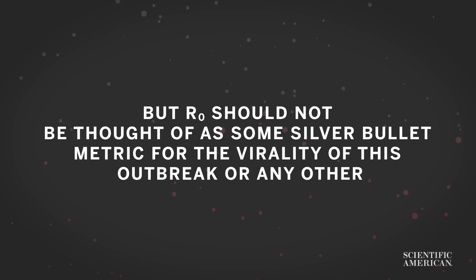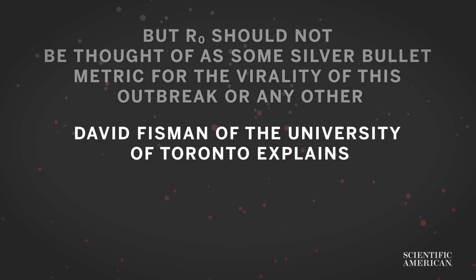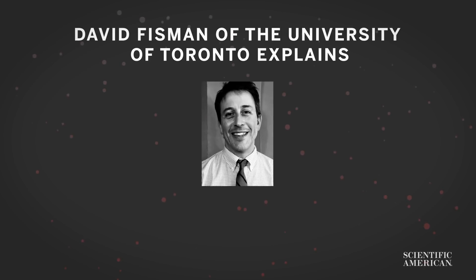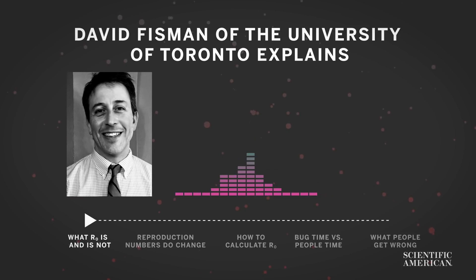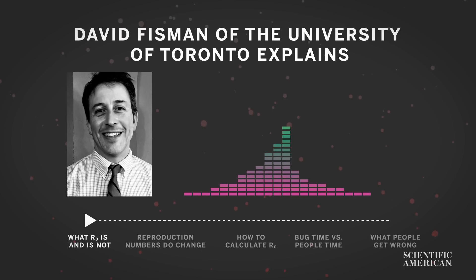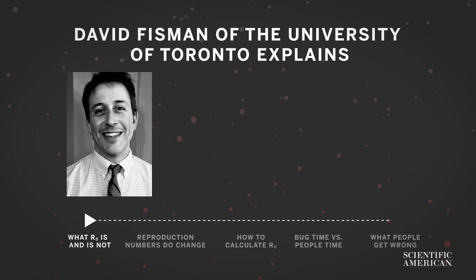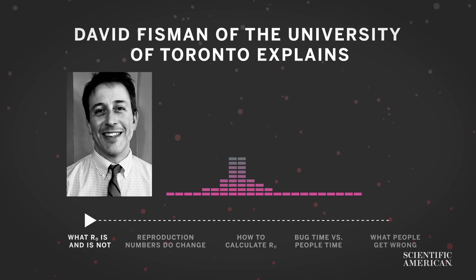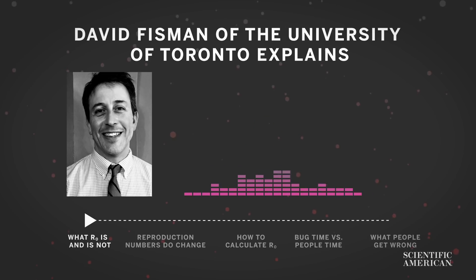But the R-naught shouldn't be thought of as some silver bullet metric for the virality of this outbreak, or any other. Infectious disease expert David Fisman of the University of Toronto explains: if you didn't know about an infectious disease, and you let it just run through a totally immune-naive population early on in the epidemic, how many secondary cases would you get for each primary case? That's what the R-naught is — it's right at baseline.